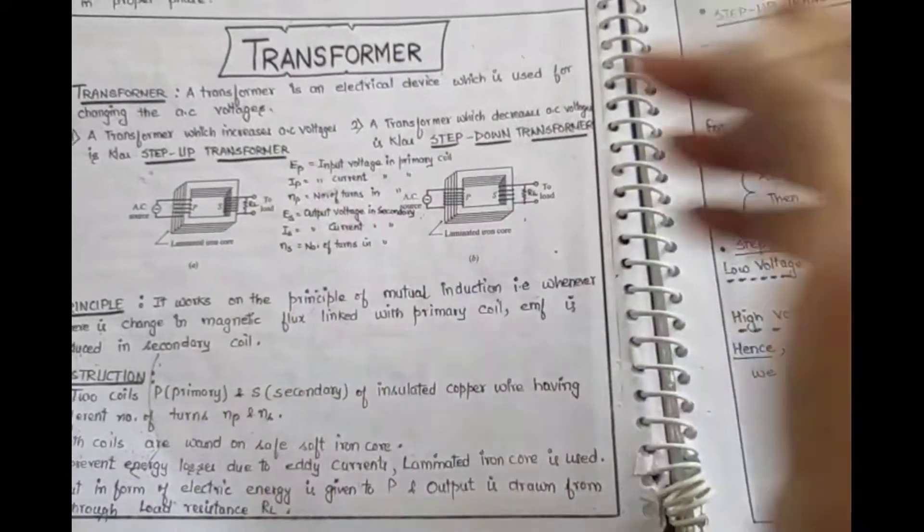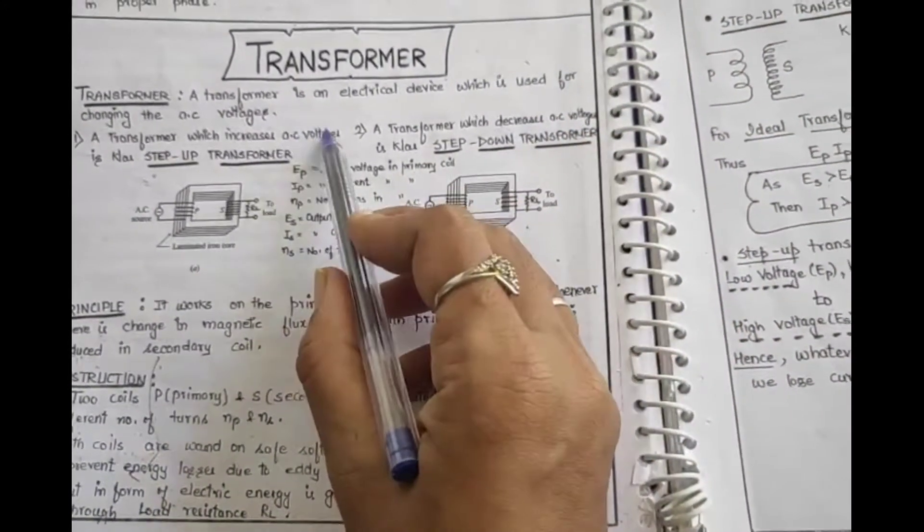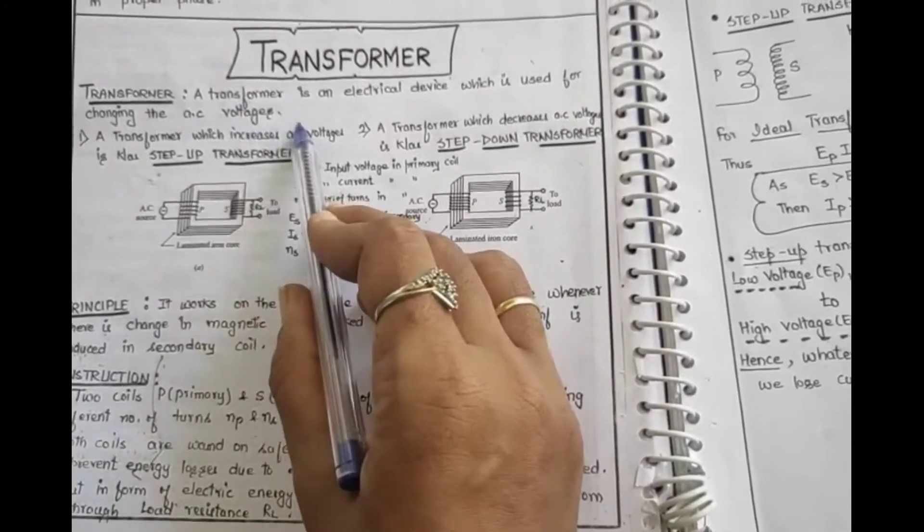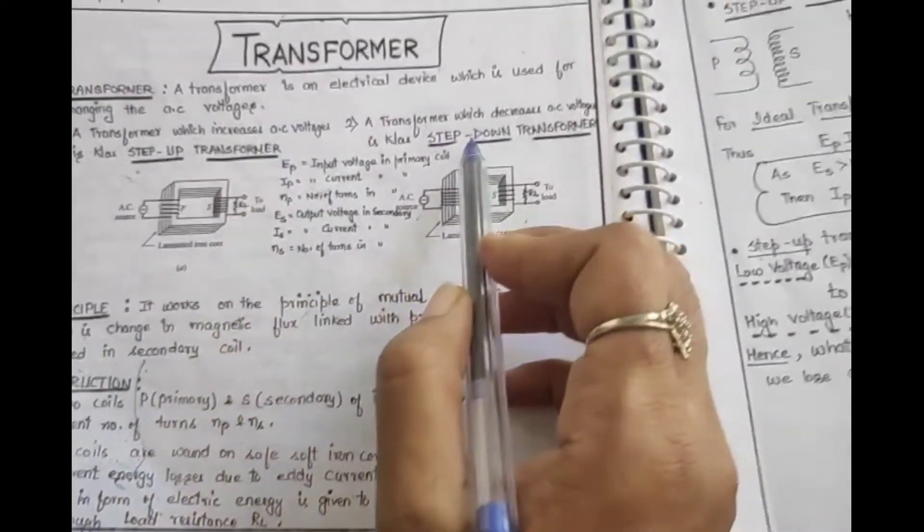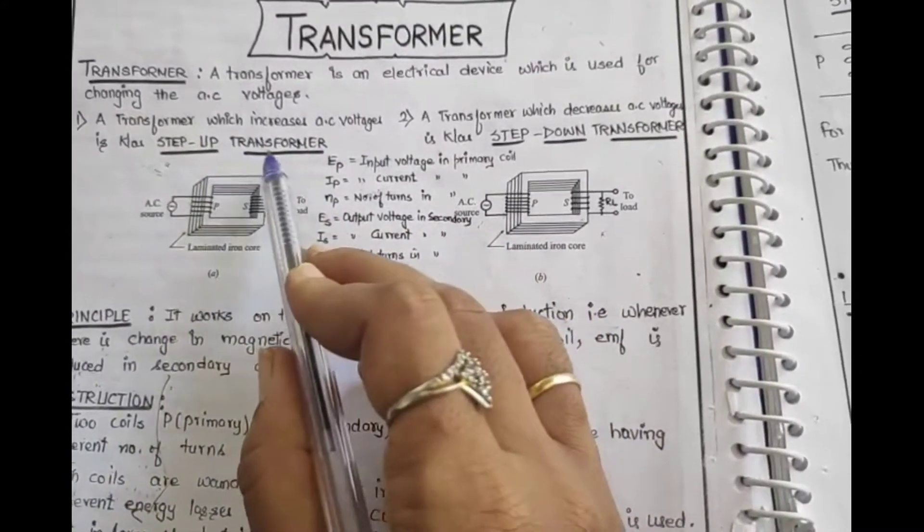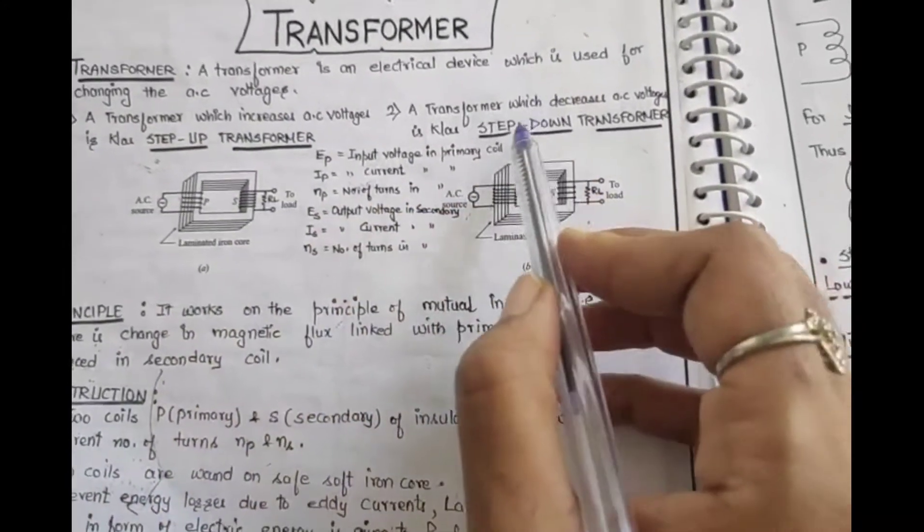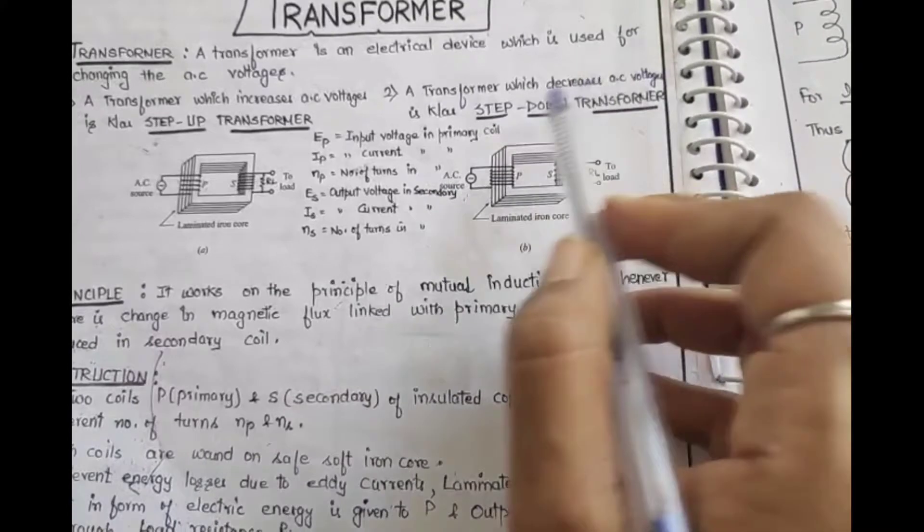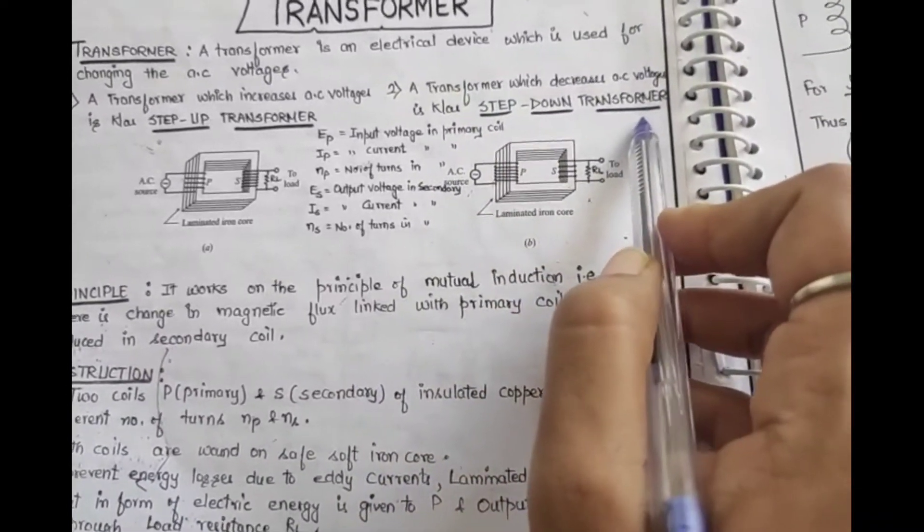A transformer is an electrical device basically used to change AC voltages. Change includes both increase and decrease. If we want to increase the voltage, we will use step-up transformer. If we want to decrease the AC voltage, we will use step-down transformer.